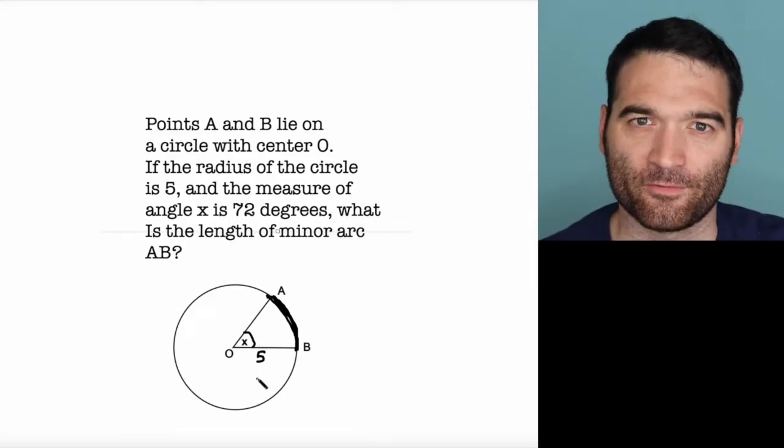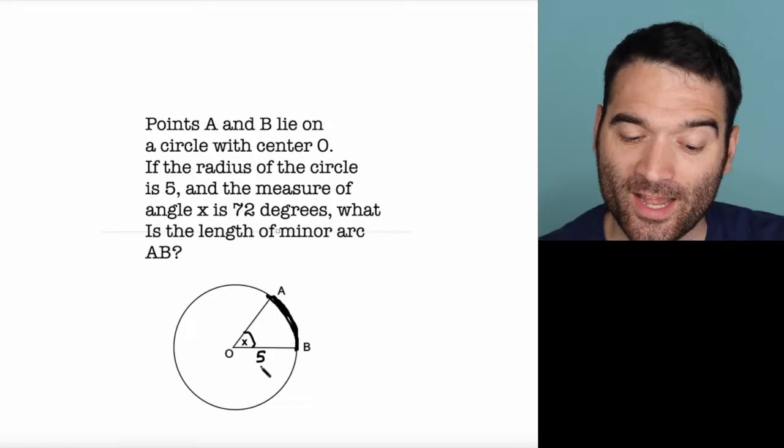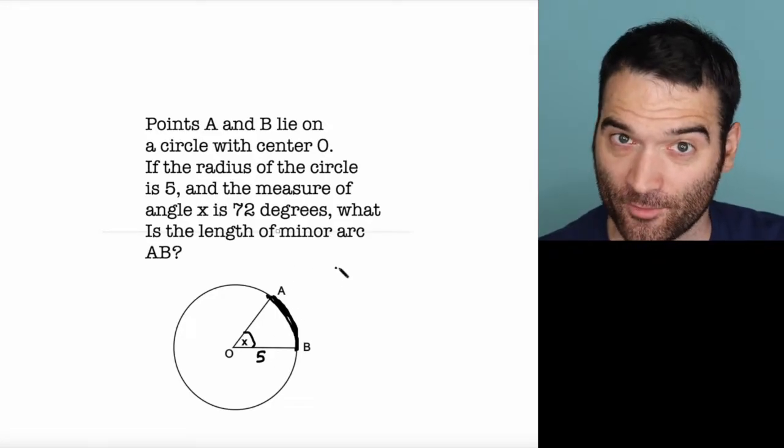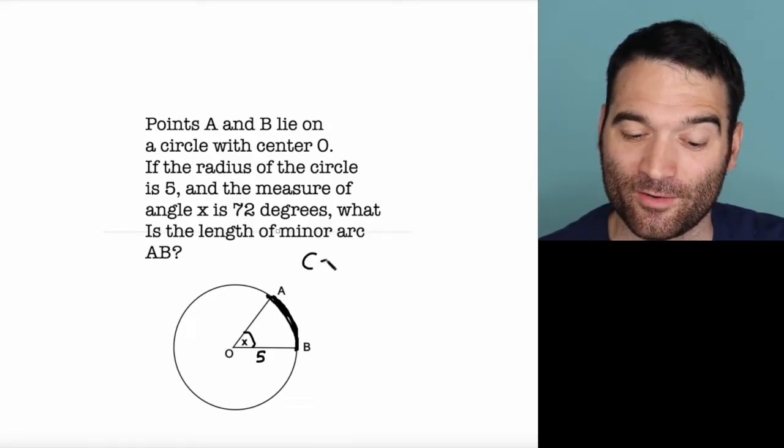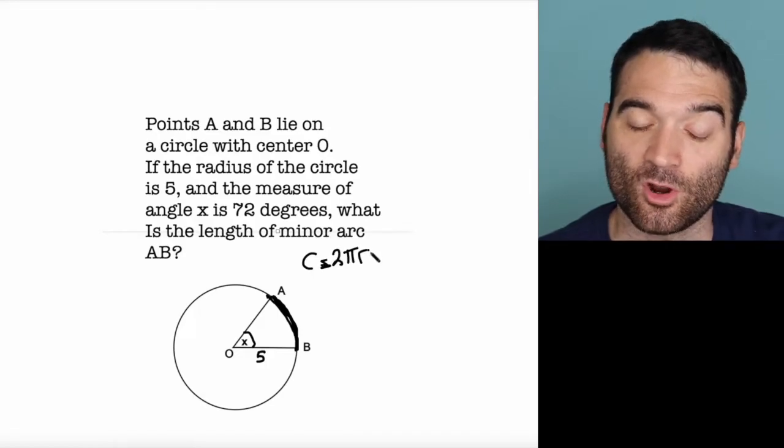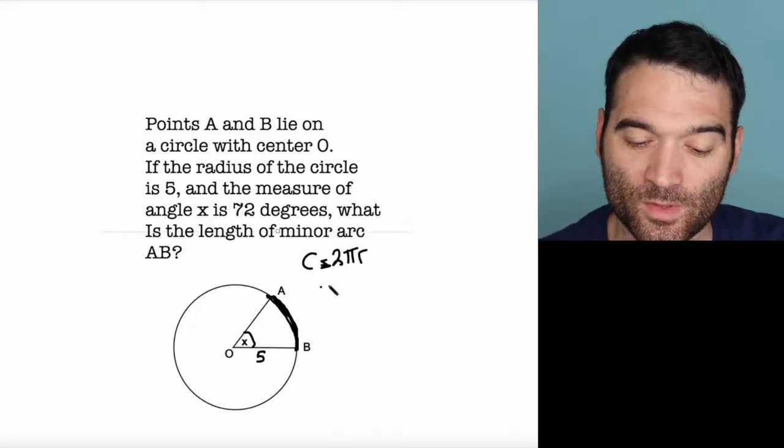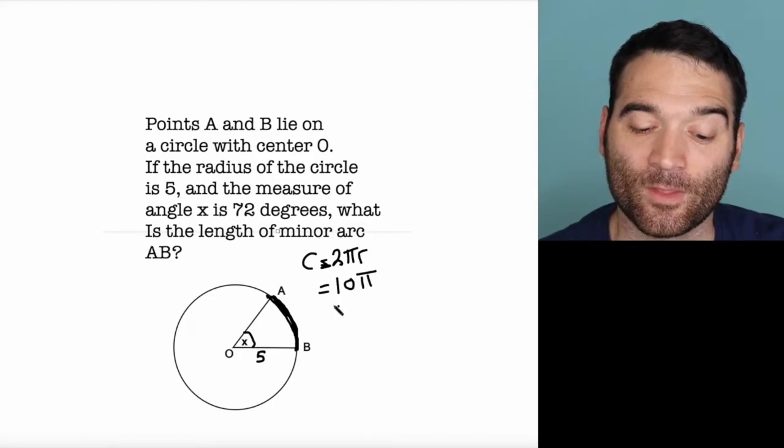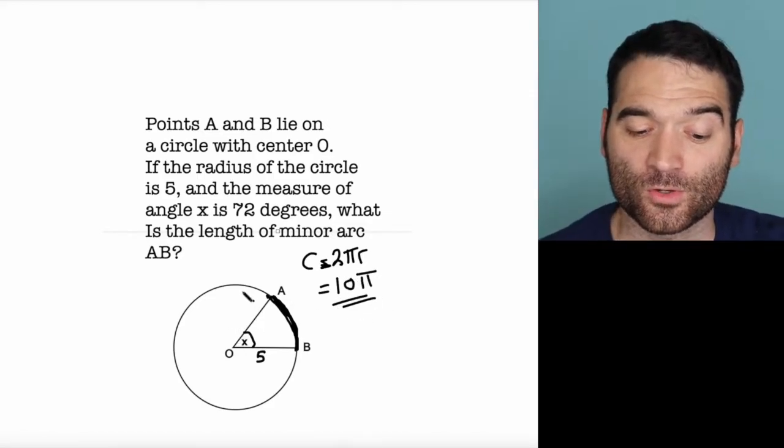What is the whole circumference of this circle? If the radius is 5, and I know my circumference formula, which you absolutely should - circumference equals 2 times pi times r, or pi times the diameter. So in this case, that's 10 pi. The circumference of this whole circle is 10 pi.